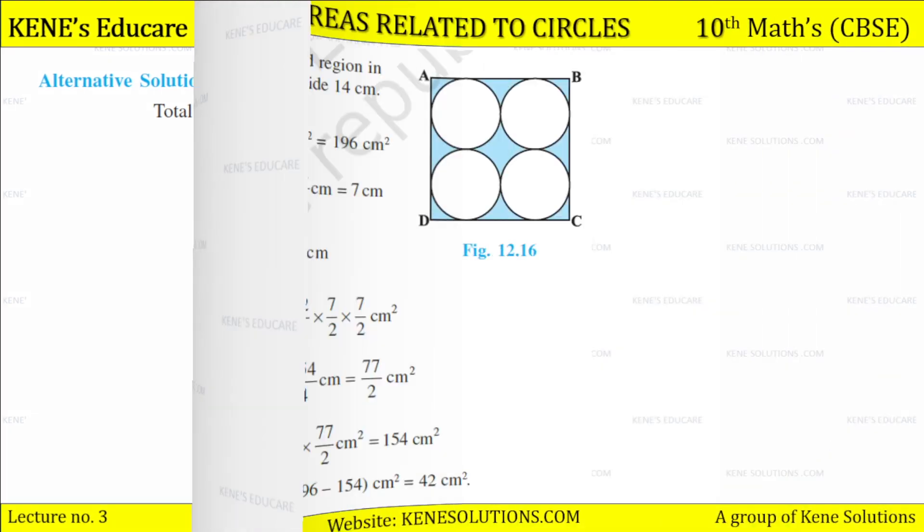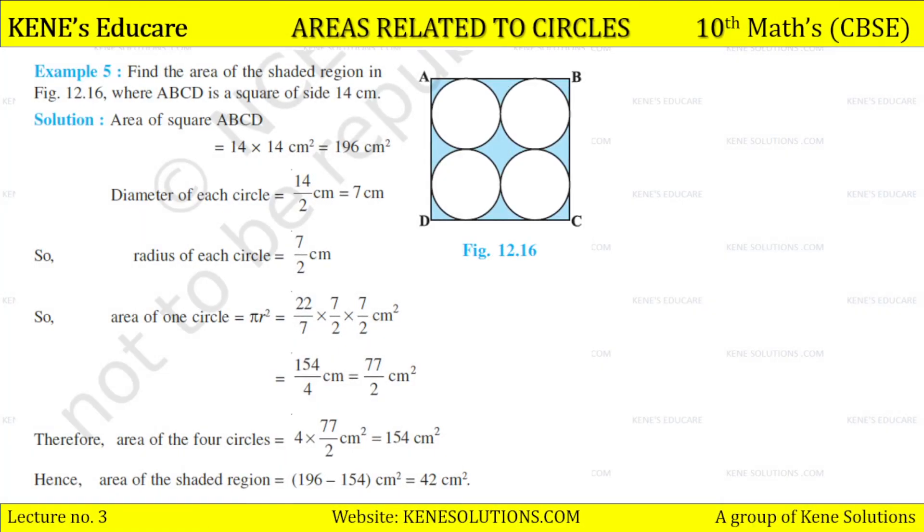Next, find the area of shaded region in figure 12.16, where ABCD is a square of side 14 cm. Area of square ABCD = 14 × 14 = 196 cm². Diameter of each circle = 14/2 = 7 cm. Radius of each circle = 7/2 cm.